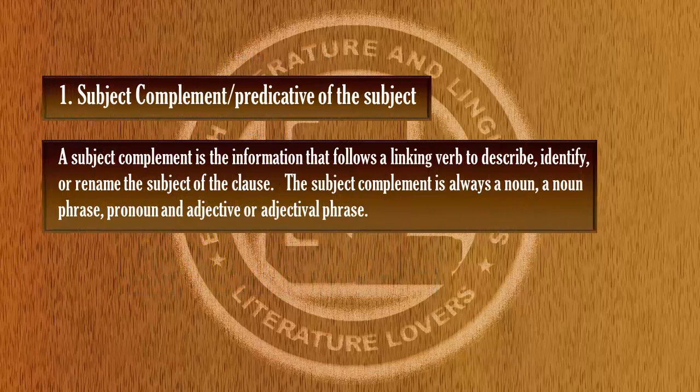The first type of complement is the subject complement, which is also known as the predicate of the subject. A subject complement is the information that follows a linking verb to describe, identify, or rename the subject of the clause. The subject complement is always a noun, a noun phrase, a pronoun, an adjective, or an adjective phrase.